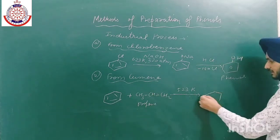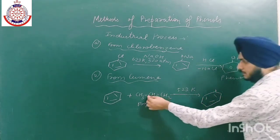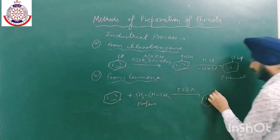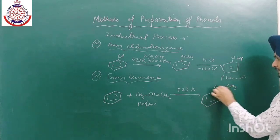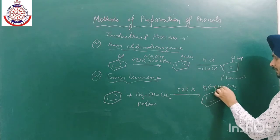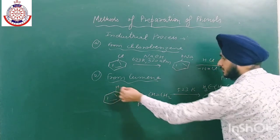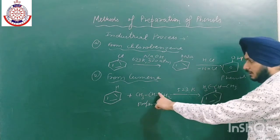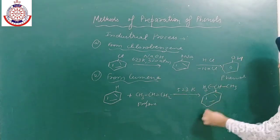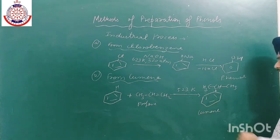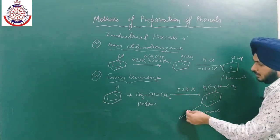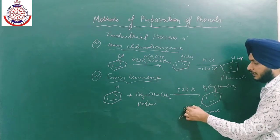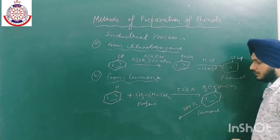When benzene reacts with propene, the bond attacks and we get cumene — a benzene ring with a –CH(CH₃)₂ group. The next step is aerial oxidation at a lower temperature of around 380 to 400 Kelvin, where O₂ enters into the C–H bond of the isopropyl group.